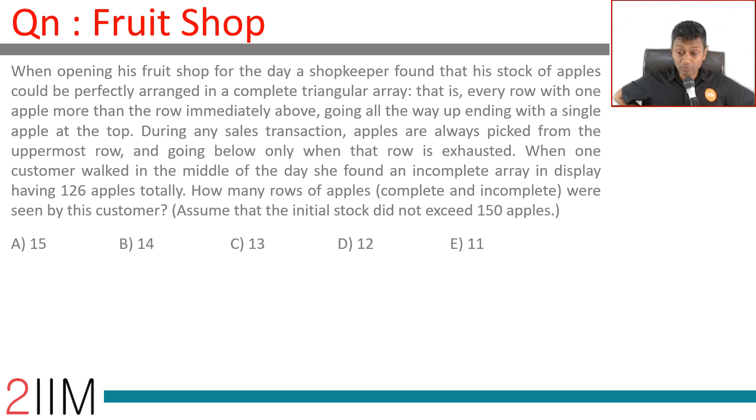When opening his fruit shop for the day, a shopkeeper found a stock of apples could be perfectly arranged in a complete triangular array. That is, every row with one apple more than the row immediately above, going all the way ending with a single apple at the top: one, two, three, four; one, two, three; one, two, one.